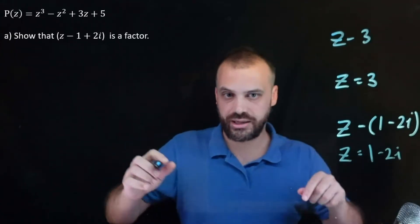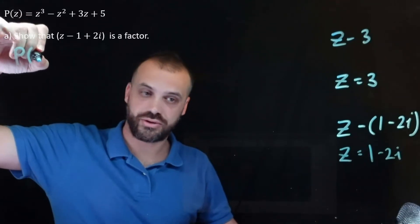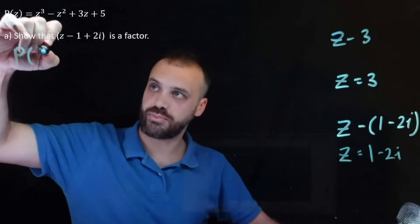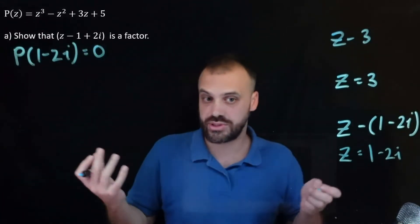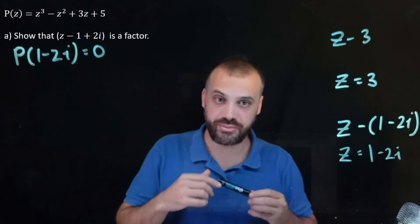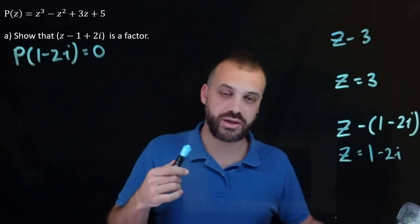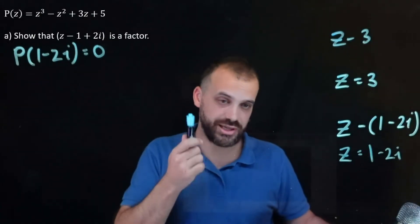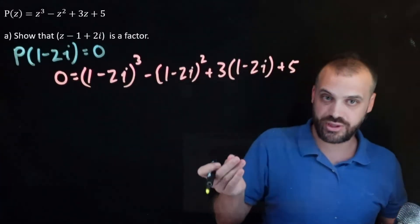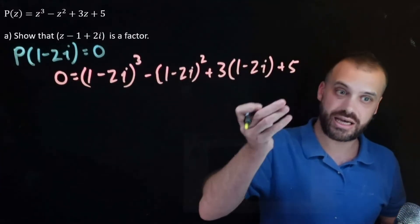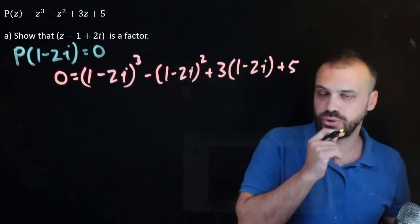So using our factor theorem, P of 1 minus 2i must equal 0 — that's what the factor theorem tells us. So 0 equals the polynomial with 1 minus 2i subbed in for z. I've subbed it in and now I need to expand everything to show that this side does in fact equal 0. That's going to be a little bit of work.